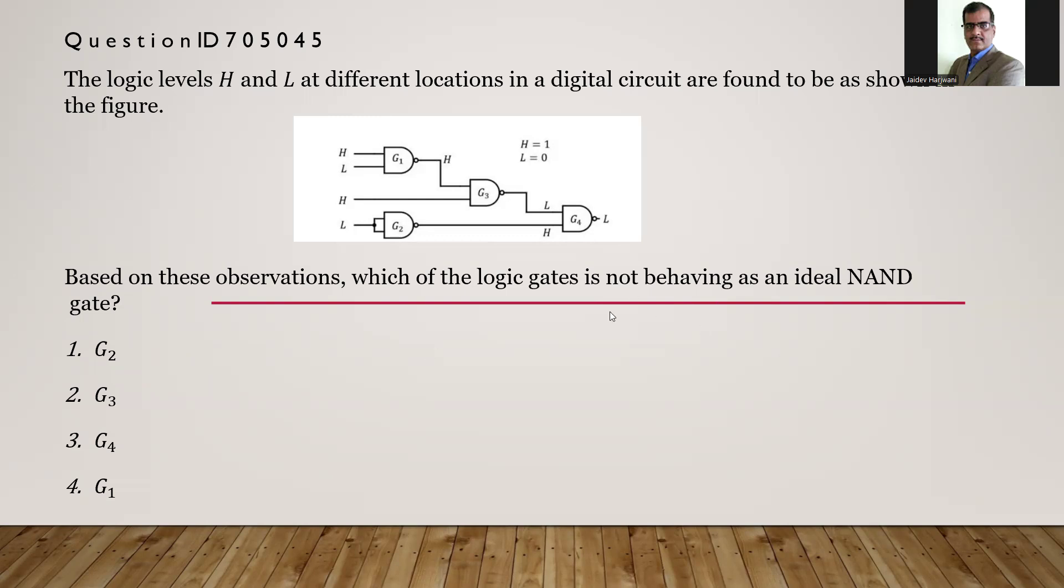We know the output of a NAND gate will be low only when both the inputs are high. In all other cases, the output of a NAND gate will be high.